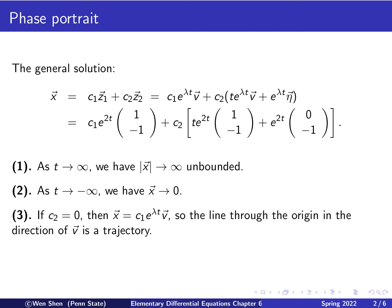Now let's look at special cases. If c2 equals 0, then that term vanishes and you only have c1*z1, which is just a scalar multiple of the eigenvector v. So all solutions will lie in the direction of the eigenvector, meaning the line through the origin in the direction of v is a trajectory. Since lambda is greater than 0, the arrows all point away from the origin.